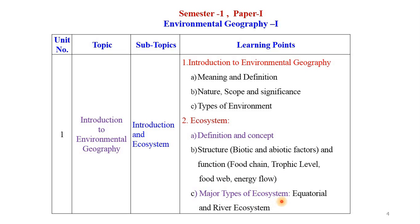The third sub-point is Major Types of Ecosystem. There are several ecosystems on the Earth's surface. Generally, ecosystems of the Earth are classified into two classes: Terrestrial Ecosystem and Man-Made Ecosystem. Ecosystems on land are called Terrestrial Ecosystem, whereas ecosystems created by man with the help of a natural environment are called Man-Made Ecosystem. Agriculture is an ideal example of a Man-Made Ecosystem, whereas Equatorial Ecosystem is an ideal example of a Terrestrial Ecosystem. The ecosystem located within water is called Aquatic Ecosystem, and a River Ecosystem is an ideal example of Aquatic Ecosystem. This is about our first chapter.